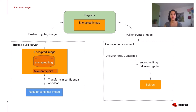In order to run a confidential workload, we need a filesystem, provided in the form of an image. We use an OCI image with a single layer. In this layer, we have the container's filesystem encrypted using LUKS, plus the fake entry point. We can transform a regular container image into this special form, and this process must be done on a trusted build server. You can always build the regular container as you did before, using your existing pipelines and CI/CD tools, and optionally use a validation tool to check the image for vulnerabilities.